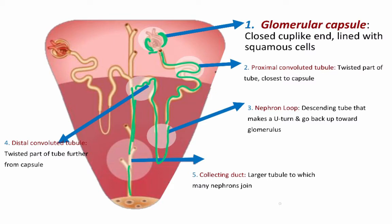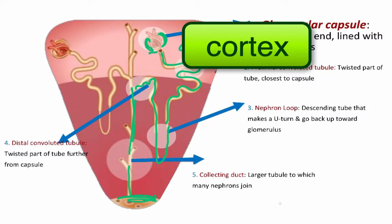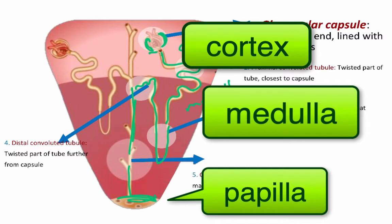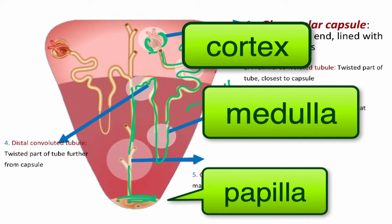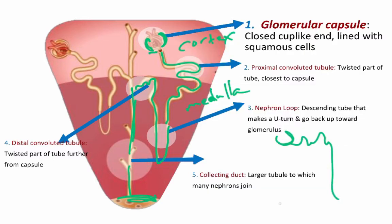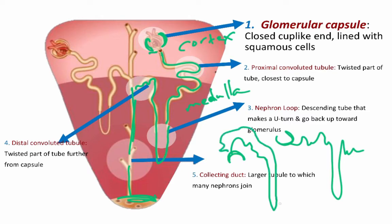The collecting duct plugs into the minor calyx. In this simplified view of a renal slice, we have cortex and medulla. One thing to be careful about when thinking about the nephron is that there is no particular way the glomerular capsule points — it could be pointing up or facing down. Sometimes the distal convoluted tubule wraps around and comes very close to the glomerular capsule before going into the collecting duct.